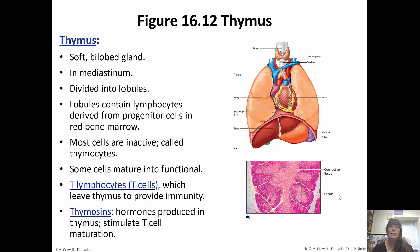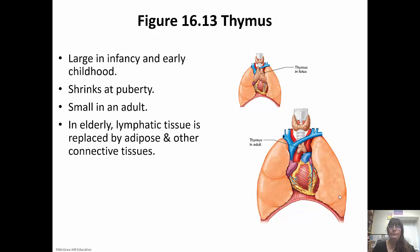The thymus is a soft bilobed gland in the mediastinum, divided into lobules that contain lymphocytes from the red bone marrow. Most cells are inactive and are called thymocytes, but some mature into functionality. T cells, or T lymphocytes, leave the thymus to provide immunity. Thymosins are hormones produced in the thymus to stimulate T cell maturation. The thymus starts out very large in infancy and early childhood but shrinks at puberty, becoming very small in adults. In the elderly, the lymphatic tissue is replaced by adipose and connective tissues, which is another reason elderly individuals are more prone to illnesses and infections.